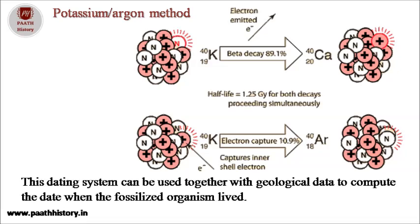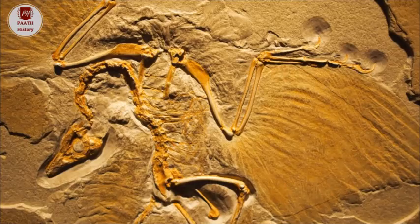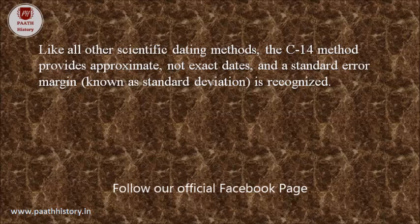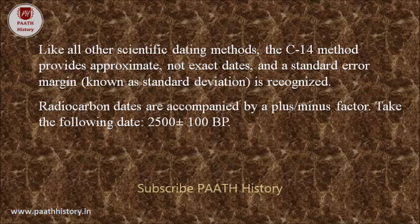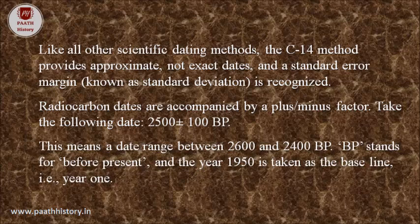This dating system can be used together with geological data to compute the date when the fossilized organism lived. Like all other scientific dating methods, the C-14 method provides approximate, not exact, dates, and a standard error margin known as standard deviation is recognized. Radiocarbon dates are accompanied by a plus-minus factor — for example, 2500 ± 100 BP means a date range between 2600 and 2400 BP. BP stands for 'before present,' and the year 1950 is taken as the baseline, that is, year one.